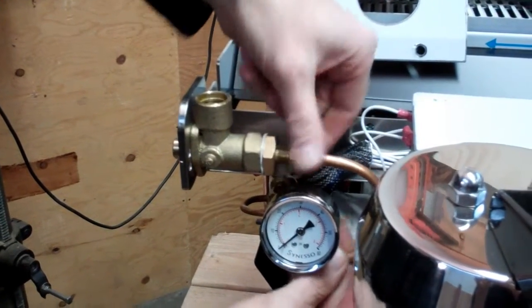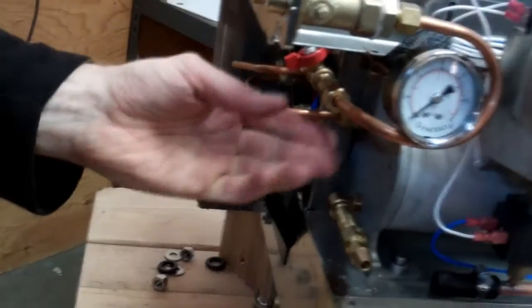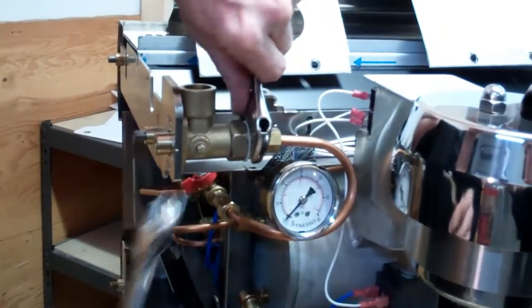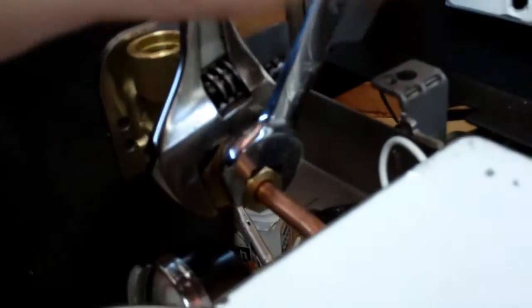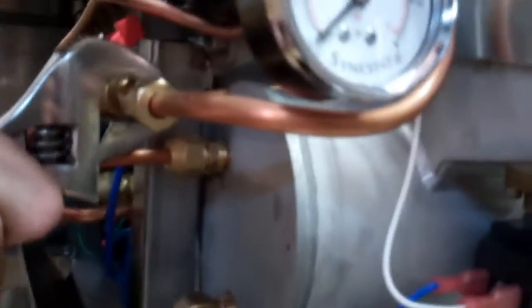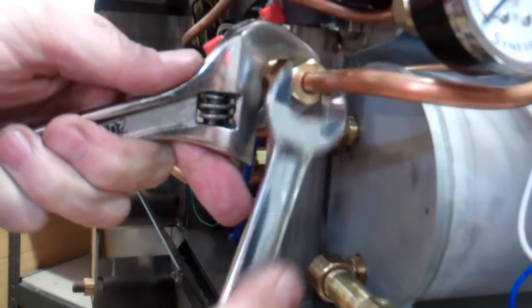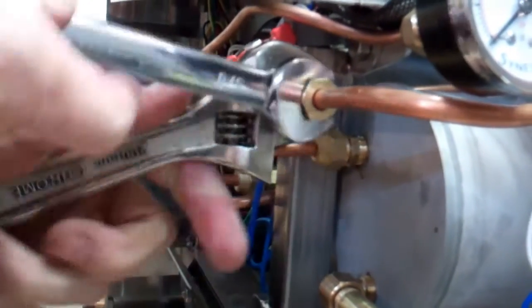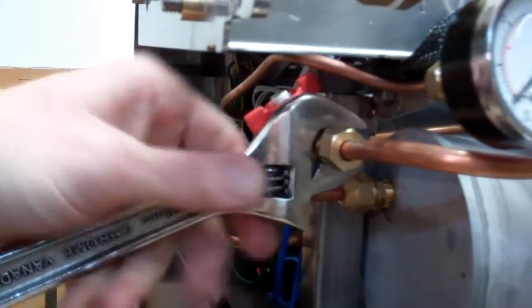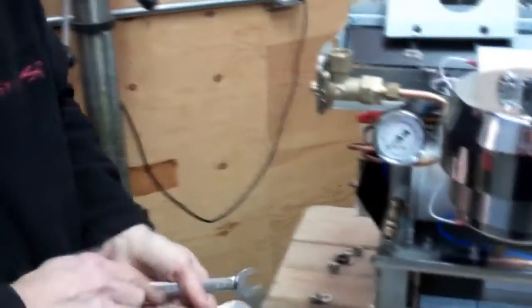Steam valve tube goes back on. Hold the nut on the steam valve. Tighten the tube at the top. Hold the nut on the ball valve. Tighten the tube at the bottom.